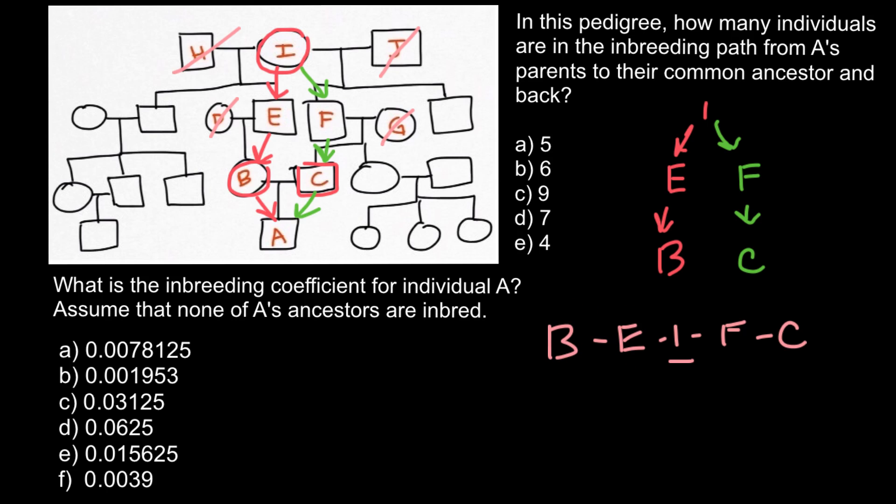As you see, the correct answer would be: we have one, two, three, four, and five people. So the correct answer would be A. We have five nodes or five people in the inbreeding pathway for person A.